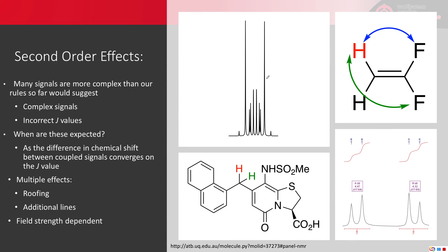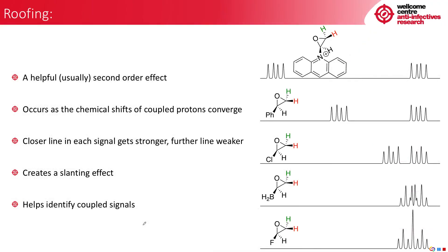And in this case, this is our AB system. Because these are rather close to one another, the J value is actually quite large. You can see these doublets are slanted. Some but not all second order effects are dependent on magnetic field strength.